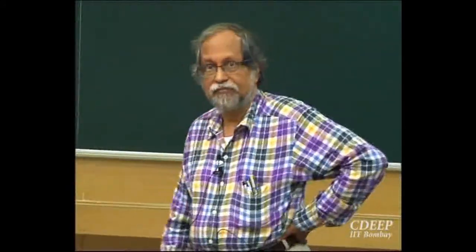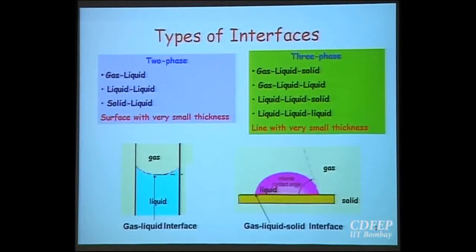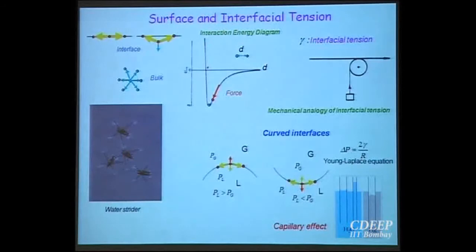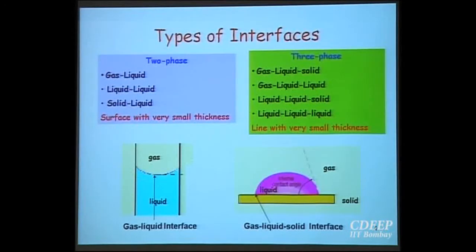I will begin with characteristics of interfaces. An interface is actually a meeting place for two or more phases. It is extremely thin — of the order of nanometer thickness. But the property of an interface is that it can affect the properties of the bulk, and therefore it must be studied to find out its effect on the bulk. You have interfaces between two phases. For example, a gas-liquid interface where a curved interface can be observed. Since its thickness is very small, the interface is effectively two-dimensional.